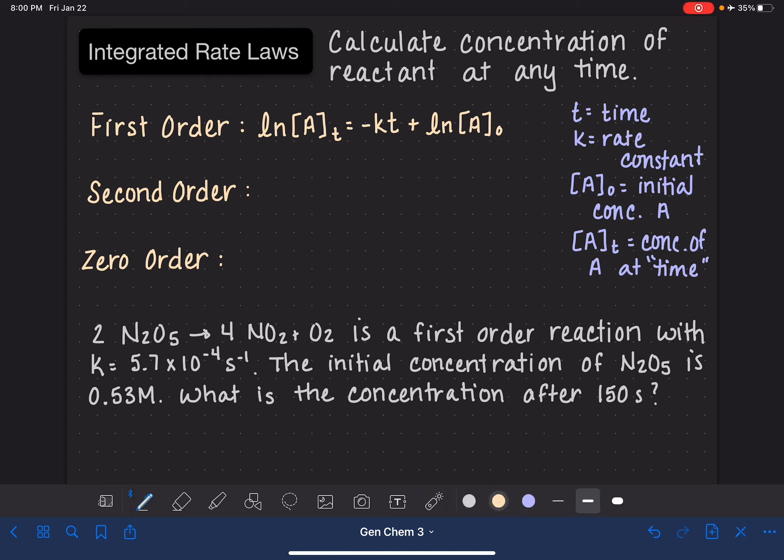For a second order reaction, the integrated rate law is a little different. It's 1 over the concentration of A at time T that is equal to positive KT, so not a negative sign this time, plus 1 over the natural log of A at time 0. And again, all these symbols are the same as they are for the first order reaction.